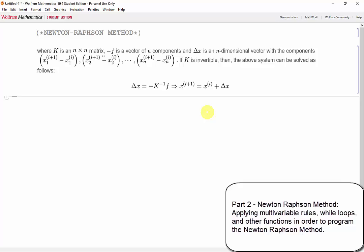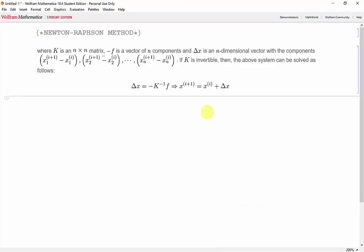Now that we've looked at evaluating multiple expressions using rules and solving non-linear systems of equations using the FindRoot function, we can use the rules to create our own Newton-Raphson method and use the FindRoot function to check our answers.